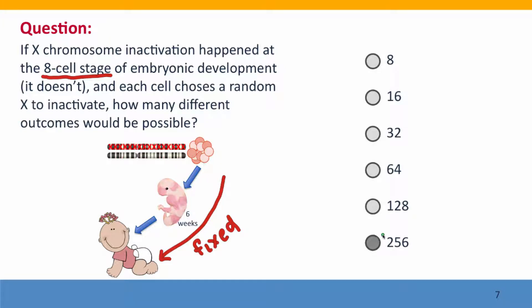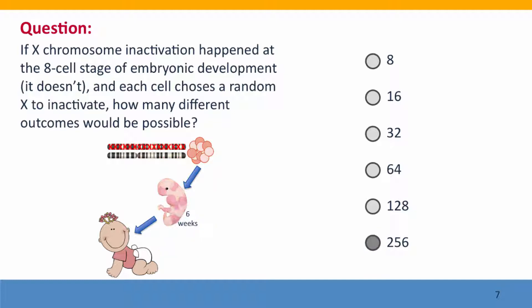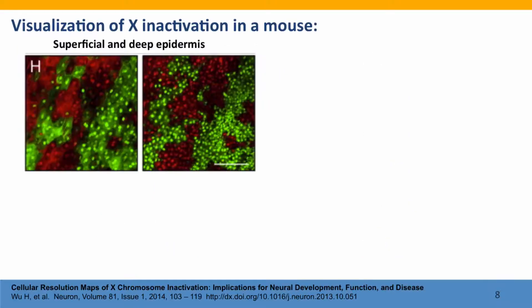Even if everything else was absolutely constant, there would be 256 different ways that this could turn out — that's a lot of variation just there. Now it's actually much more complicated than that. Here's the data from Nathan's lab.